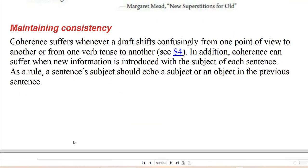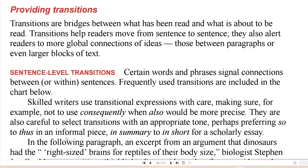Maintaining consistency: coherence suffers whenever a draft shifts confusingly from one point of view to another, or from one verb tense to another. In addition, coherence can suffer when new information is introduced with the subject of each sentence. Transitions are bridges between what has been read and what is about to be read. Transitions help readers move from sentence to sentence, and certain words and phrases signal connections between sentences.